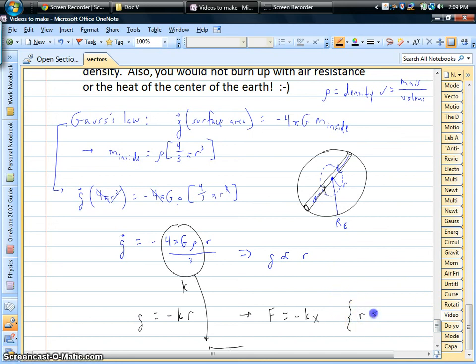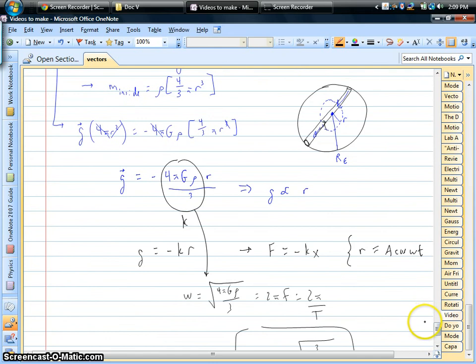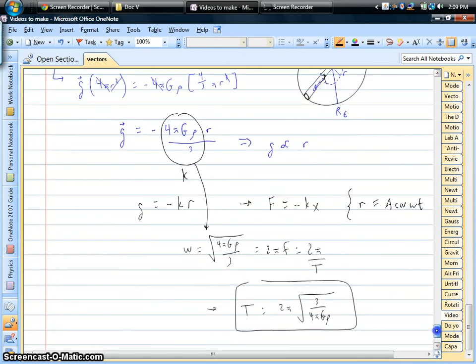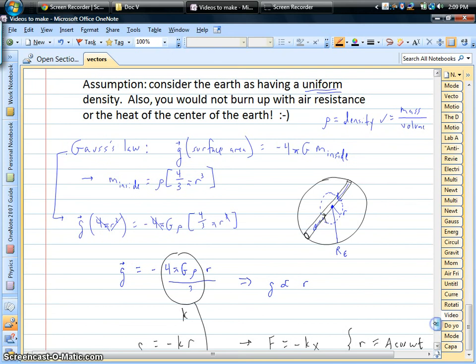You have simple harmonic motion. You'd be flying back and forth as if you're on a spring passing through the Earth. You could figure out your frequency, you could figure out your period as you're going through this thing. Your position, velocity, acceleration would go as a sine or cosine. So for example, your position might be some number times the cosine as a function of time. So it's all really weird stuff, but really cool, fun to think about.